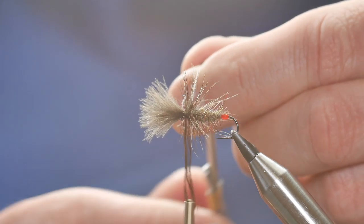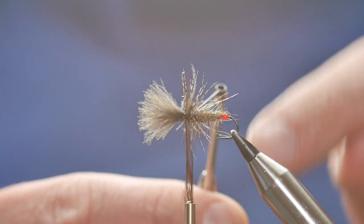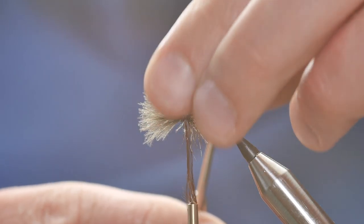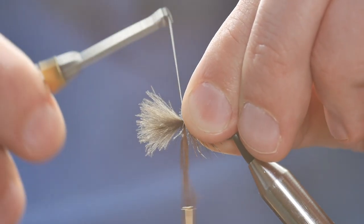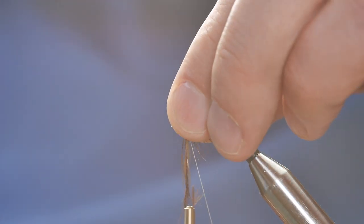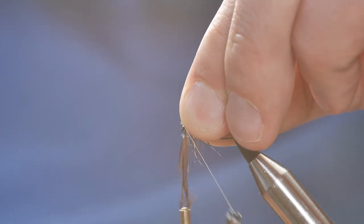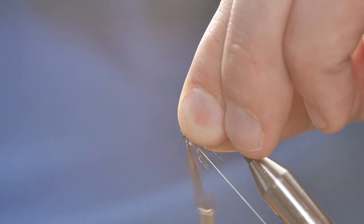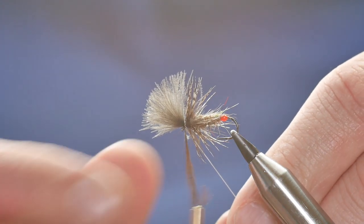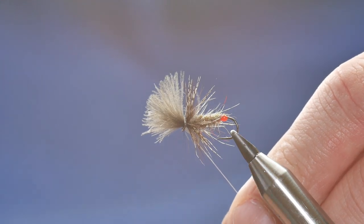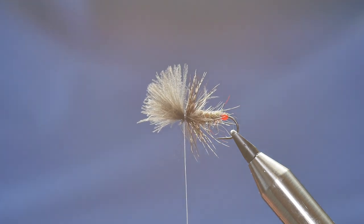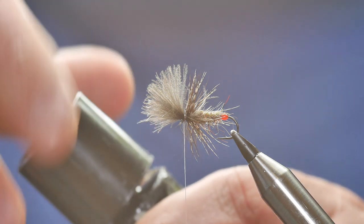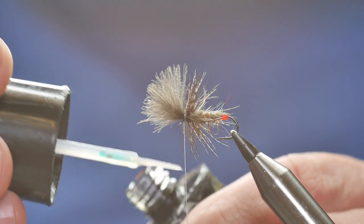So, I've got my thread now in behind my hackle. I don't want to catch any of my CDC. A couple of turns. Then, I'm going to bring everything back. So, I've brought my thread to the front of the hook now. And I've got some fairly firm wraps going in there. So that I can pull that away. Then, to finish off. I'm simply going to add a little bit of UV resin.